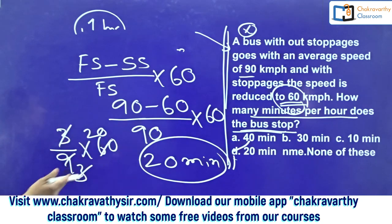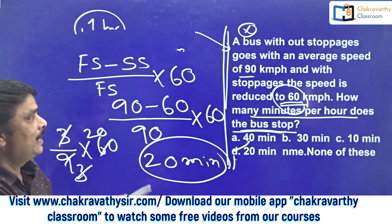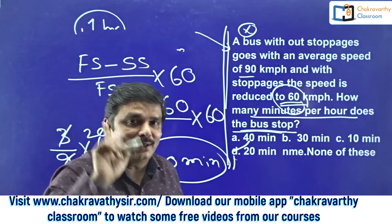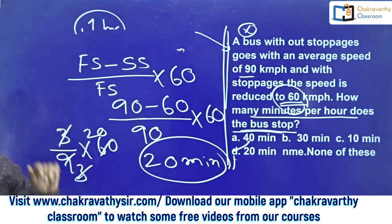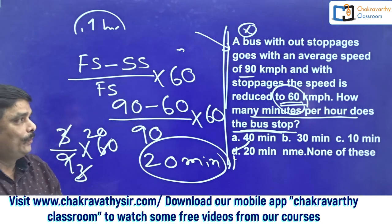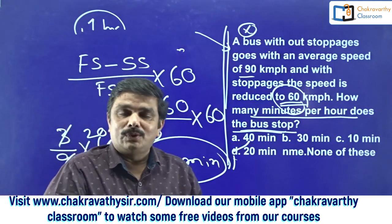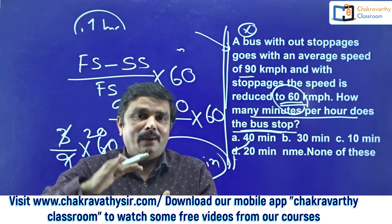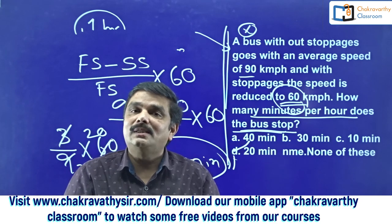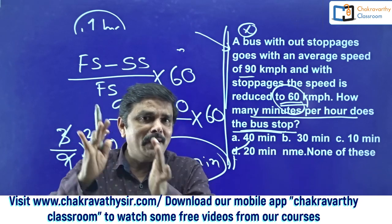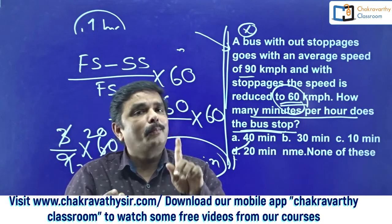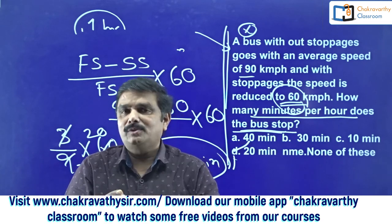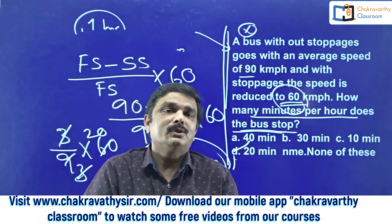There is another method also, but don't go for that — you will be confused. Just note these two methods: if the direct question format is there, apply the shortcut; otherwise go by the logical method. This is the fifth session in this series on time and distance. Tomorrow we are going to change the chapter — we will discuss either time and work or profit and loss, because many students are asking for those.